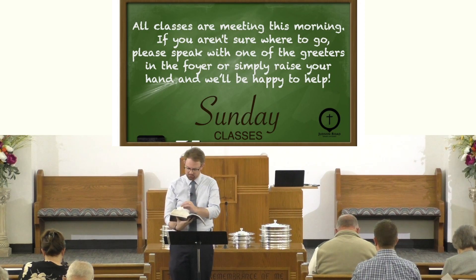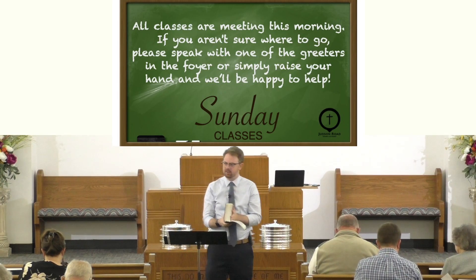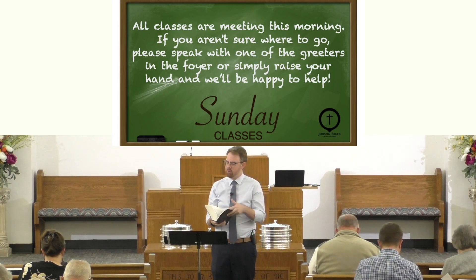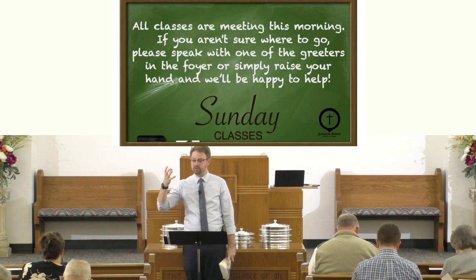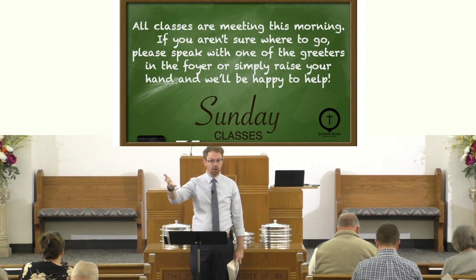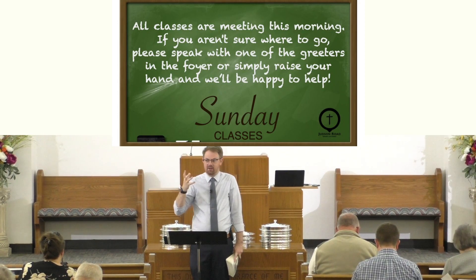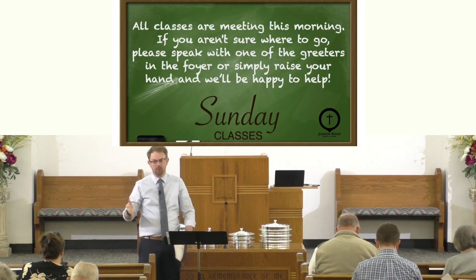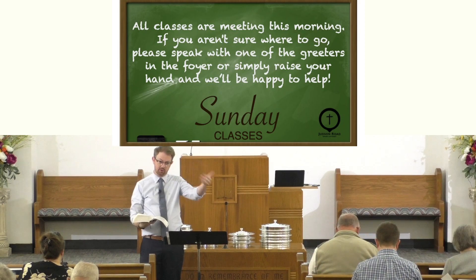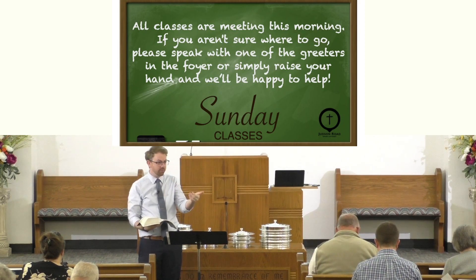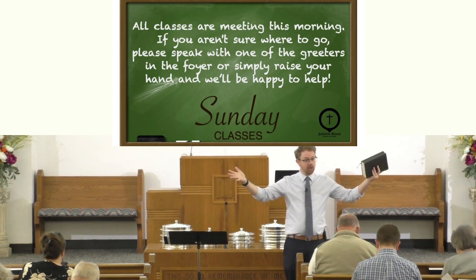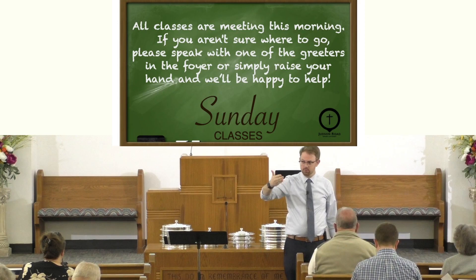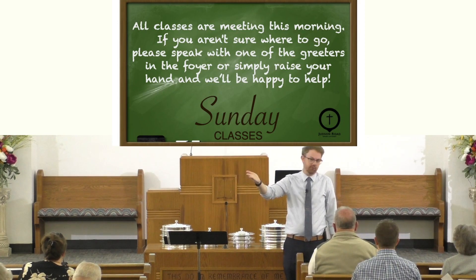In Exodus chapter 6:1-8, at this point Moses has already gone to Pharaoh. After God tells Moses to go ask Pharaoh to let the people go, Moses perhaps expected things to go well. But God had said 'I'm going to harden Pharaoh's heart.' That's exactly what happens in Exodus 5. Moses says, 'Let the people of God go,' and Pharaoh responds, 'Who is the Lord that I should serve him? I will not let them go.'